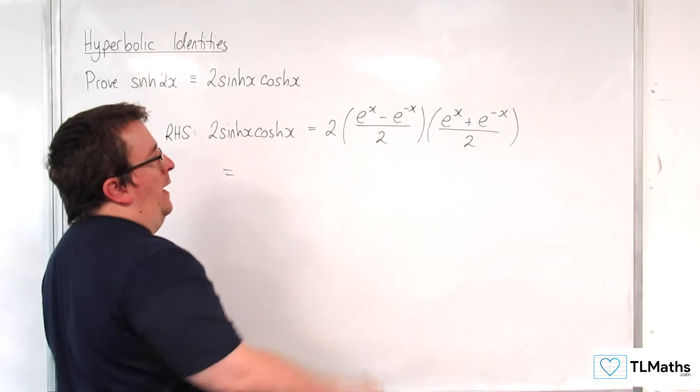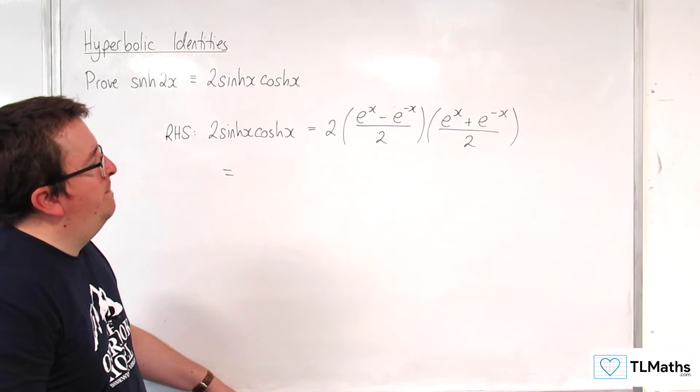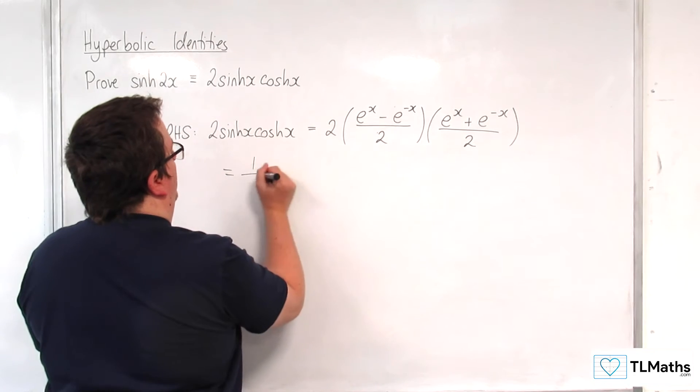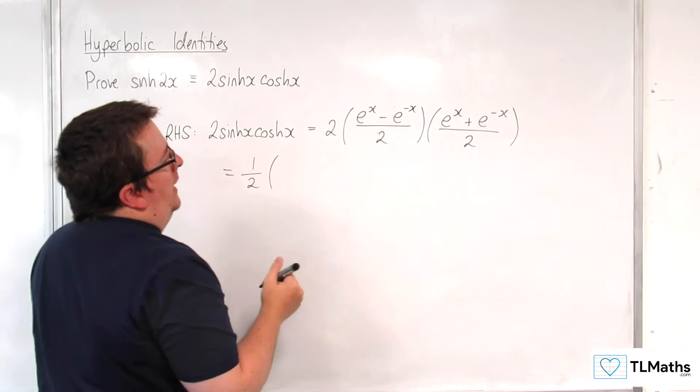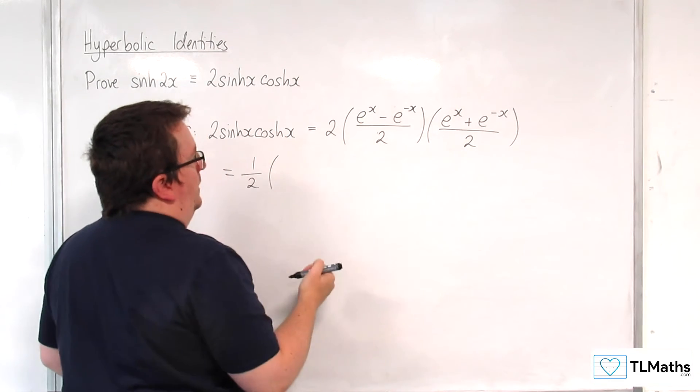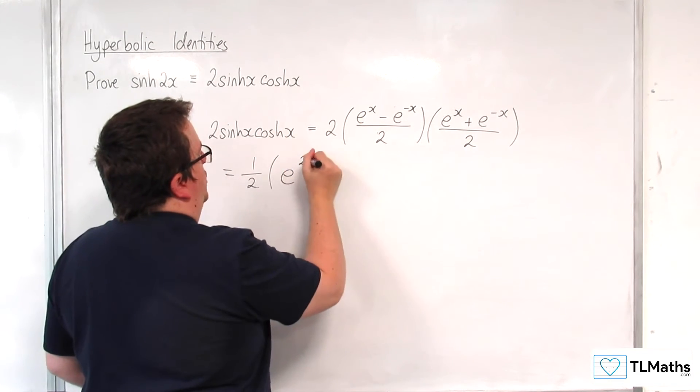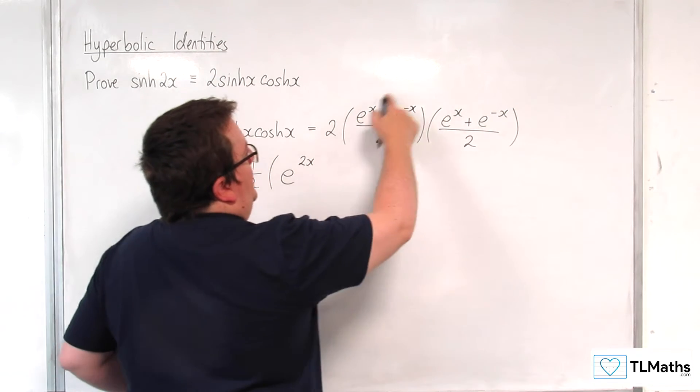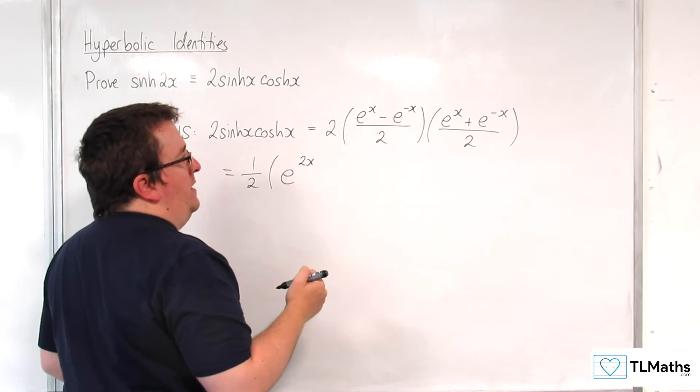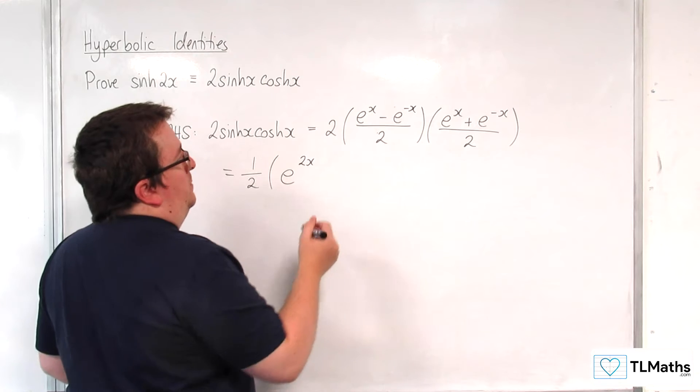So clearly we've got a 2 and a half cancelling. So we can factor out 1 half. And then we've got e to the x times e to the x which is e to the 2x. We've got e to the x times e to the minus x which is going to be plus 1.